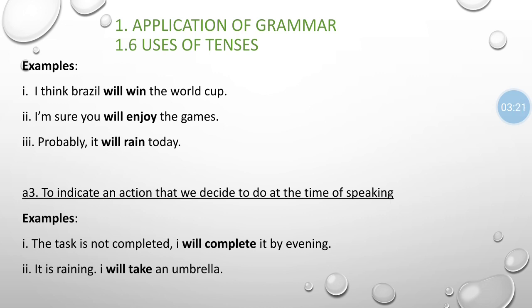Simple future tense is also used to indicate an action that we decide to do at the time of speaking. For example: 'The task is not complete — I will complete it by evening.' 'It is raining — I will take an umbrella.' These are on-the-spot decisions or predictions made at the time of speaking.